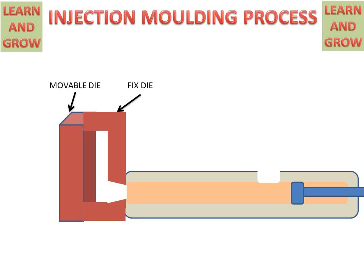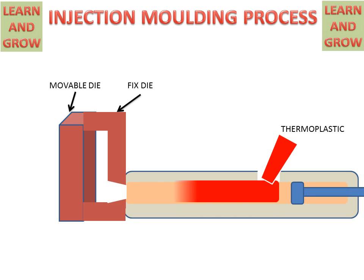Now we will see the process of injection molding. The raw material thermoplastic will enter from the port, and the plunger will force this molten material to the die.